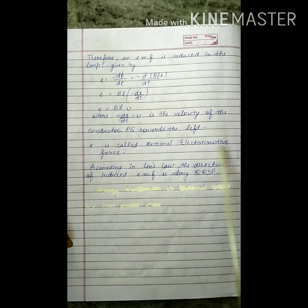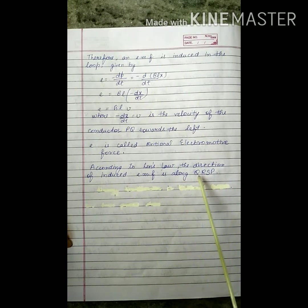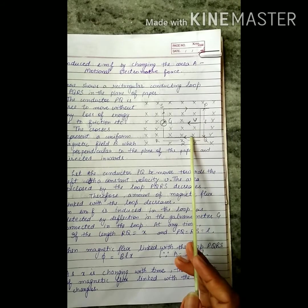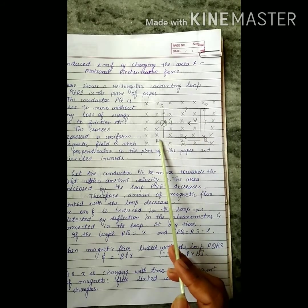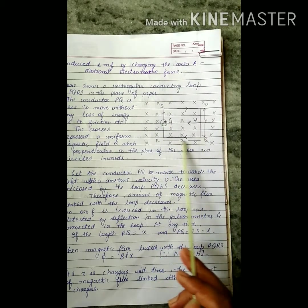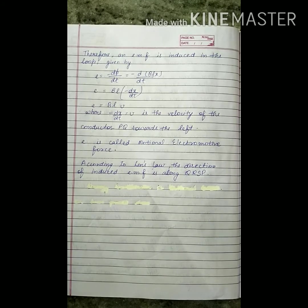This quantity e is called the motional electromotive force. According to Lenz's law, the direction of the induced EMF will be along q→r→s→p, meaning the current flows in the clockwise direction q→r→s→p. So by changing the value of the magnetic field as well as the area, we can produce EMF.